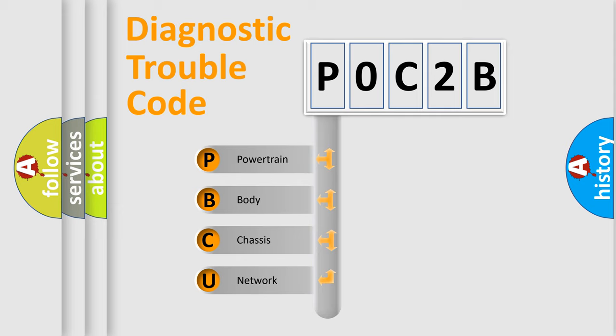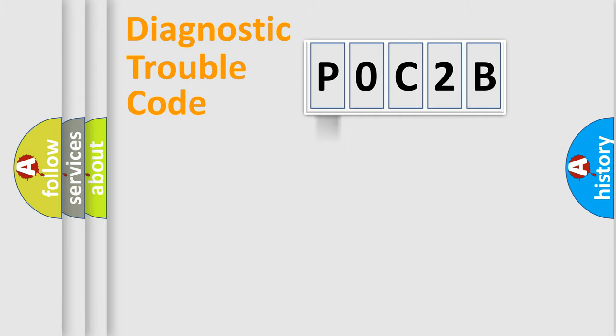We divide the electric system of automobiles into four basic units: Powertrain, Body, Chassis, and Network. This distribution is defined in the first character code.